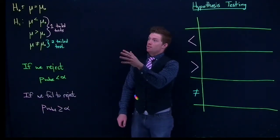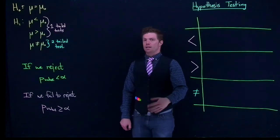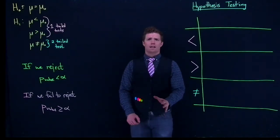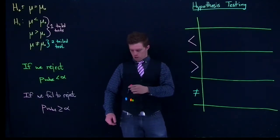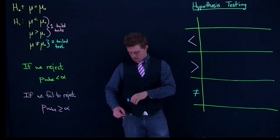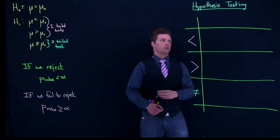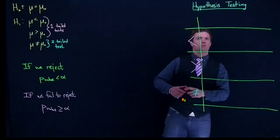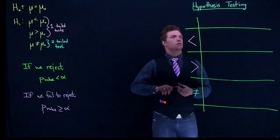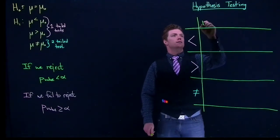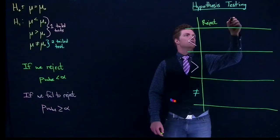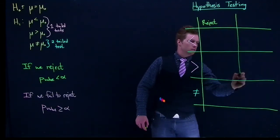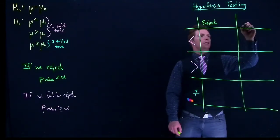So with this setup, we know that if we reject less than alpha, and if we fail to reject, greater than or equal to alpha. Whatever alpha is that we set up, if it's ten percent, if it's five percent, that's going to be our rejection criteria. So let's draw a picture of what it's going to look like if we reject, and if we fail to reject.